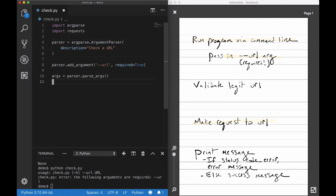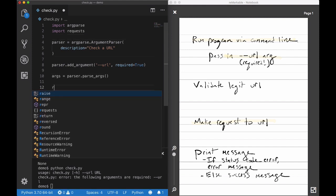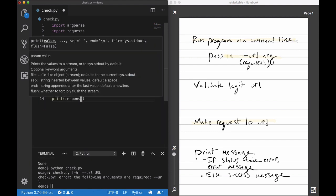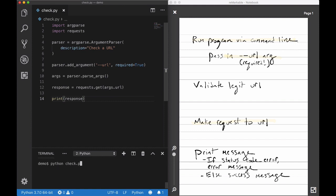We'll import the requests library and use it to make a get request to the URL passed in as a command line argument. So we'll have the program print out the response, and let's test it out. I'm going to run the program passing in the URL of my website, and we get a response of a 200, which is a success.